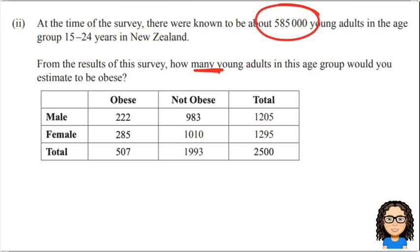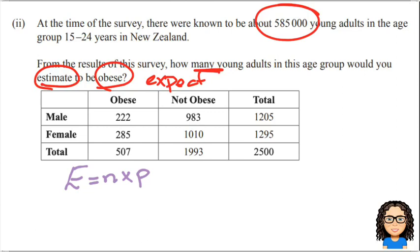There's a good hint. The word 'estimate' is a key word here. We could also use the word 'expect' — it means the same thing when we talk about expecting to be obese. So as soon as I see this word 'estimate', my brain goes straight away to the formula e equals n times p. This is our estimated or expected number, equal to the sample size n times the probability p.